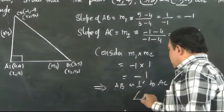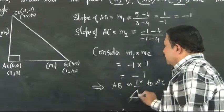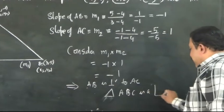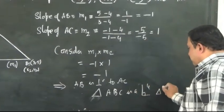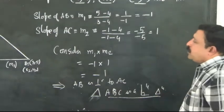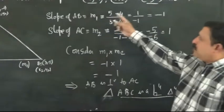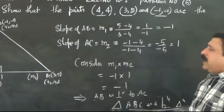Therefore triangle ABC is a right-angled triangle. Here we have not used Pythagorean theorem or distance formula. Using the concept of slope, we have shown that these three vertices form a right-angled triangle.